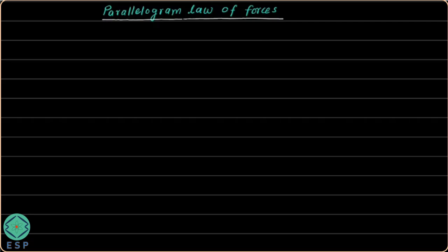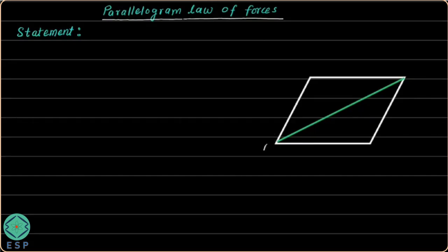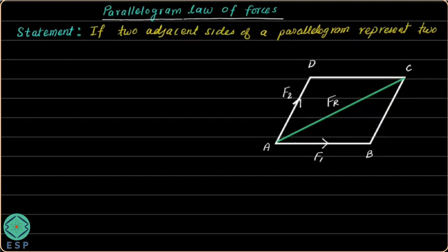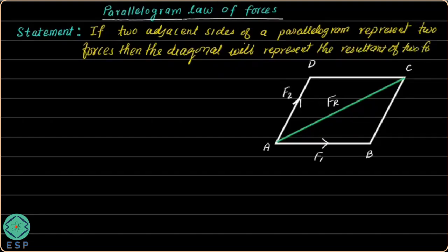First we will discuss the statement of the law. This law says: if two forces are represented by two adjacent sides of a parallelogram — let us call the vertices A, B, C, and D — then side AB represents force F1 and side AD represents force F2. The diagonal AC represents the resultant of these two forces. If two adjacent sides of a parallelogram represent two forces, then the diagonal will represent the resultant of those two forces.